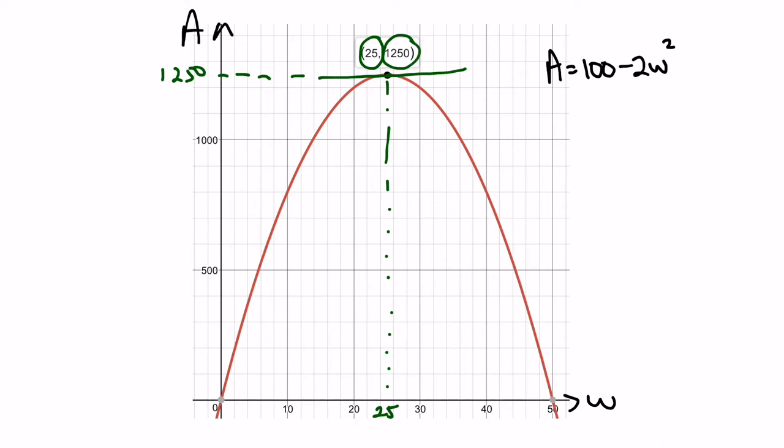That will give us an area of 1250 meters squared. If we pick some points to the left of our critical point, let's say 10, go up to our curve and draw in a tangent line there at the point 10, you can see that it's positive. If we went to the right, say 40, went up to our curve and looked at the tangent line there, we can see that it's negative.